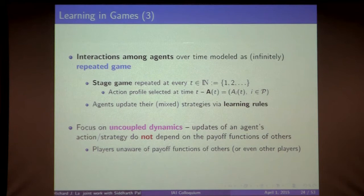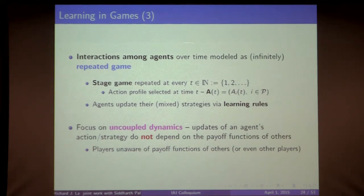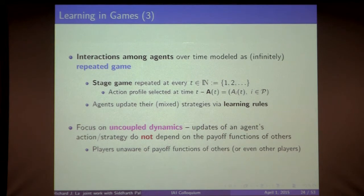We model the interaction over time as an infinitely repeated game. The incomplete information stage game is repeated at every t = 1, 2, 3, and so on. Agents update their strategies through learning by observing what's happening. Since we deal with incomplete information games, I focus on uncoupled dynamics, where the updates of an agent's strategies do not depend on the payoff functions of others — you may not know other players' payoff functions or even the actions they select.